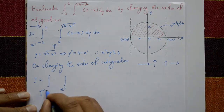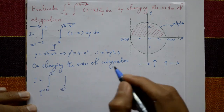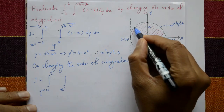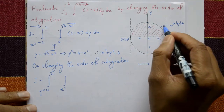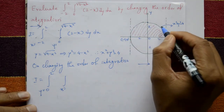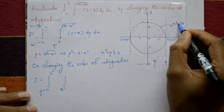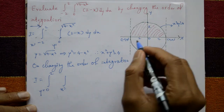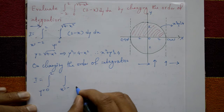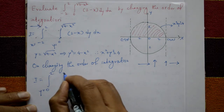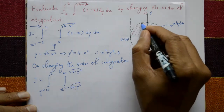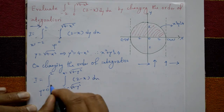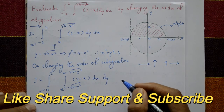So y goes from 0 to 2. For x, we go from the left curve to the right curve. From x squared plus y squared equals 4, we get x equals negative square root of 4 minus y squared (left/negative side) and x equals positive square root of 4 minus y squared (right/positive side). The function remains 2 minus x. So after changing the order: I equals integration from y equals 0 to 2, integration from x equals negative square root of 4 minus y squared to positive square root of 4 minus y squared, of 2 minus x, dx dy.